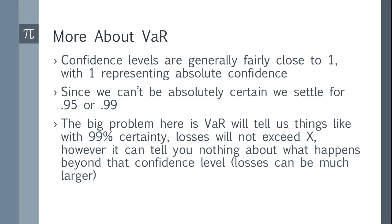95% and 99% confidence levels are what are typically seen. The big problem with VAR is we don't know what happens once we exceed our confidence level. For example, a 99% confidence level means the portfolio had a negative 2.33 standard deviation move. On a daily basis we expect the move to be around 0, so we're saying it went down 2.33 standard deviations below that expected level. Beyond that, the loss can get much larger. It's important to note that when we calculate VAR this way, we're really calculating an average VAR — what would happen if we had this negative 2.33 standard deviation move on average.